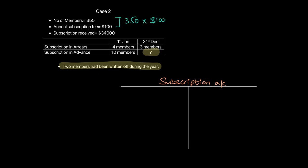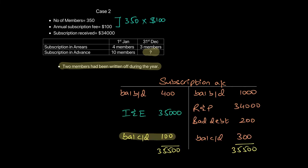Using this information, draw the subscription account. The opening subscription in arrears is $400 — that's 100 times 4 — and closing arrears is $300, for those three members. Subscription in advance at the start of the year is for 10 members: 10 times 100 = $1,000, your opening liability. The subscription received amount — receipt and payment — is $34,000. Bad debt is $200, as two members were written off at 100 times 2.